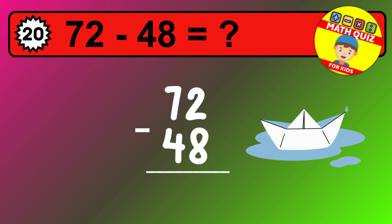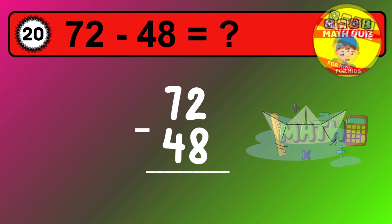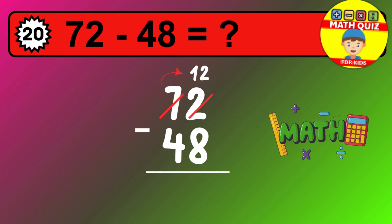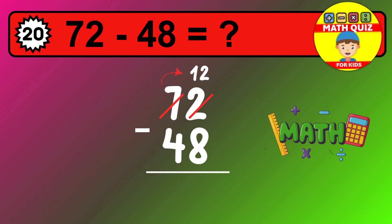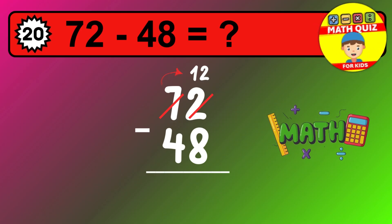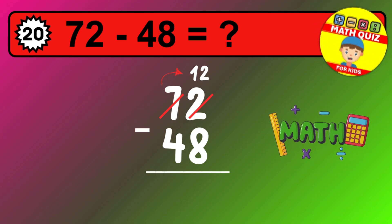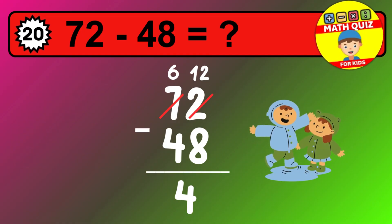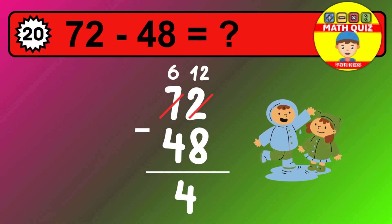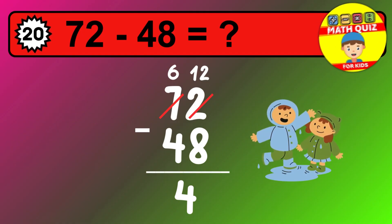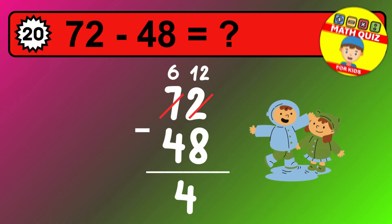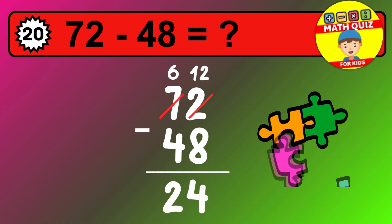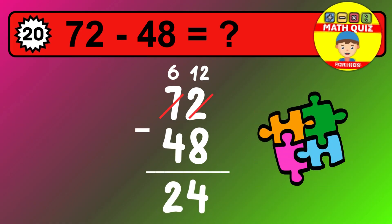Let's solve this step by step. We start with the units. Two minus eight is not possible, so we need to regroup. We take one ten from the tens column. Now we have six tens, and the units become twelve. Now we subtract. Twelve minus eight is four. Then we go to the tens. Six minus four is two. The final answer is twenty-four.